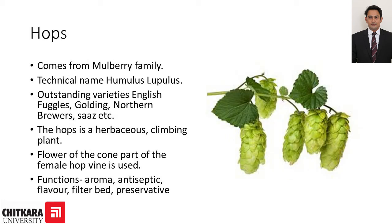Next we have hops. Hops come from the mulberry family; these are a kind of creepers. The technical name is Humulus lupulus. Outstanding varieties are Fuggle from England, Golding which is again from England, Northern Brewer, and Saaz which is from Czechoslovakia. The hop is a herbaceous climbing plant, and flowers of the cone part of the female hop vine are used.